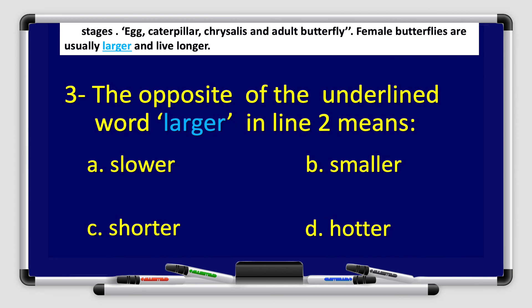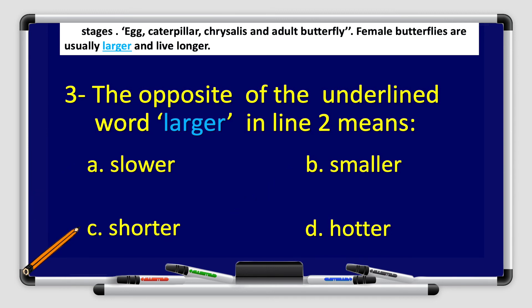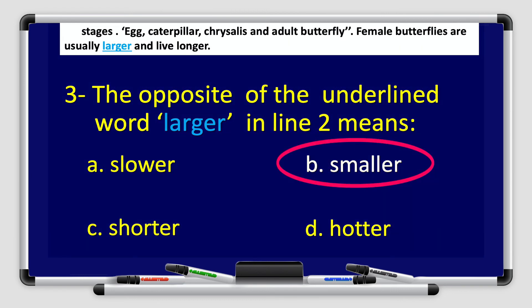Number 3: The opposite of the underlined word 'larger' in line number two means — A: slower, B: smaller, C: shorter, or D: hotter. Let's read together: female butterflies are usually larger and live longer. We want to identify the opposite of the word larger. That's right, the answer is B: smaller.